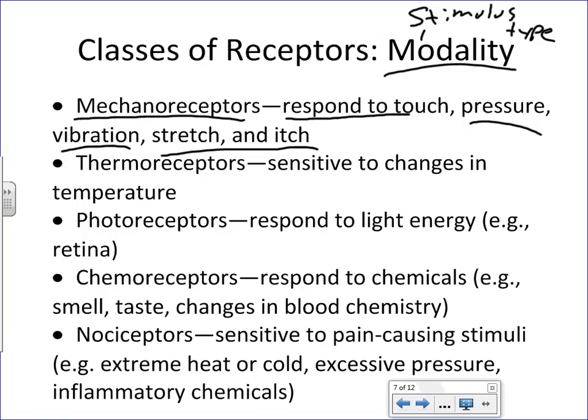Most mechanoreceptors are going to be more peripheral type receptors toward your skin, but also in the connective tissue capsules of organs — they are widely distributed. When you feel touch, you're mechanically altering the properties of that receptor. The Pacinian corpuscle is probably the most well-studied type of sensory receptor and is a type of mechanoreceptor.